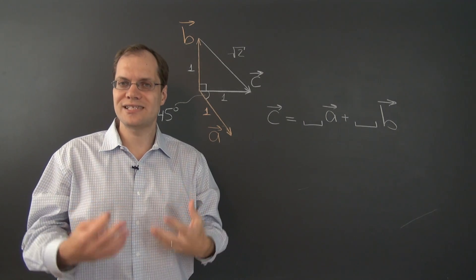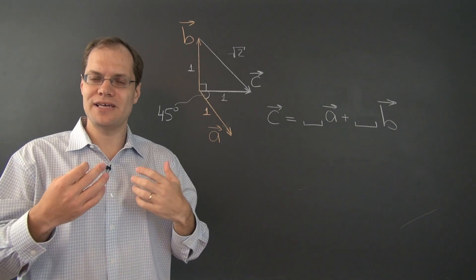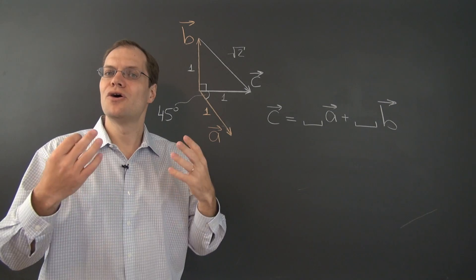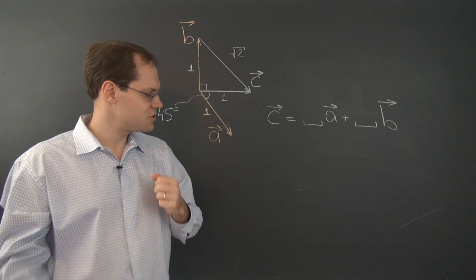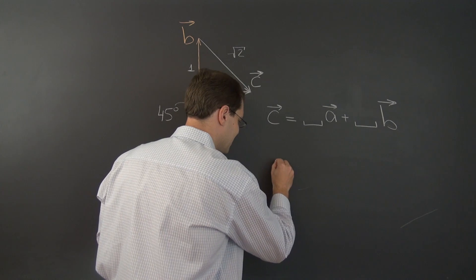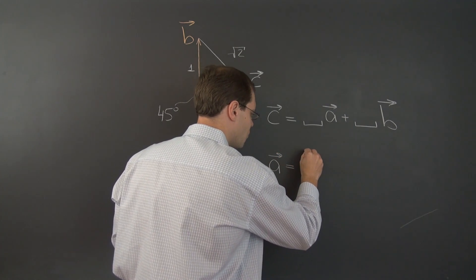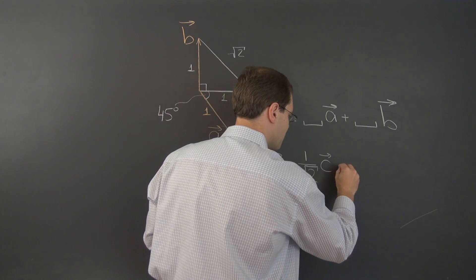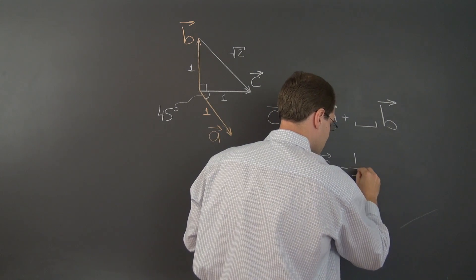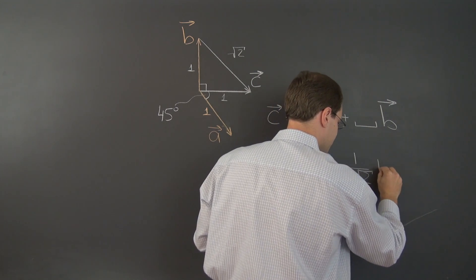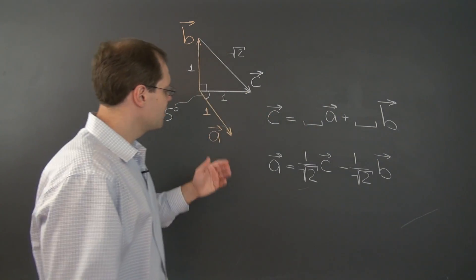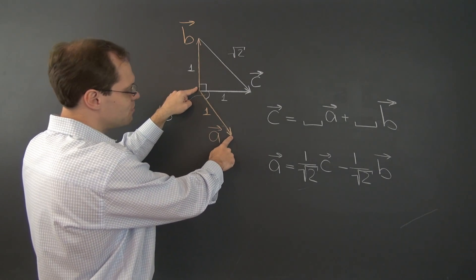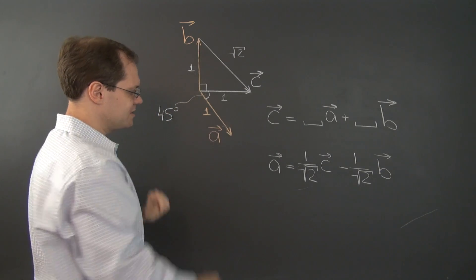So we need to scale it. We need to multiply it by a number that would make it the right length. And that number, of course, is simply 1 over square root of 2. So what we have just discovered is that A equals 1 over square root of 2 C minus 1 over square root of 2 B. So this is as simple as one of the exercises from the last video with an additional step of rescaling. And so we're done with that.